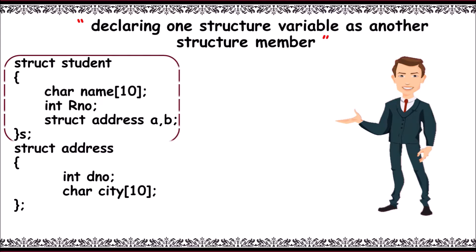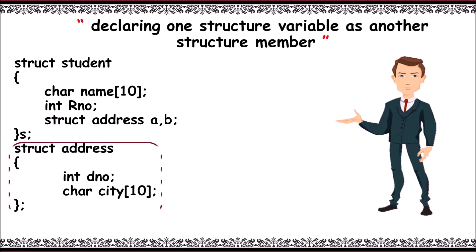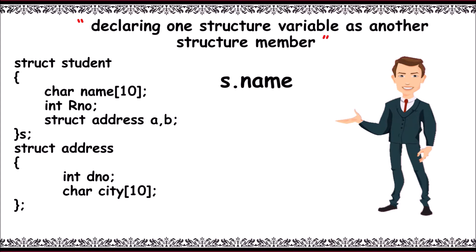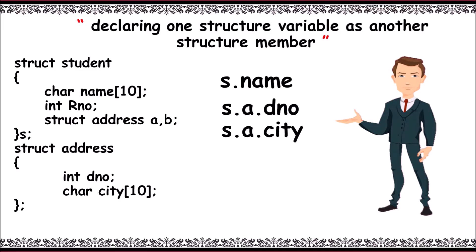For the second method — declaring one structure variable as another structure's member — consider two structures: 'student' and 'address'. Declaring struct address variables inside struct student as members is called a nested structure. 's.name' refers to student s's name, 's.a.dno' refers to student s's address a's dno, 's.a.ct' refers to student s's address a's city, and 's.b.ct' refers to student s's address b's city.